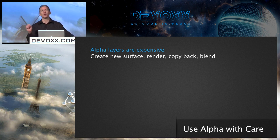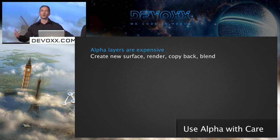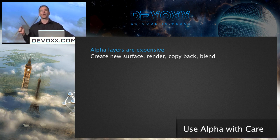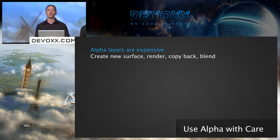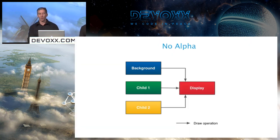When we draw a view normally, we just draw it directly into that surface using GL commands. But when we have a translucent view, we create a temporary buffer, draw into that buffer, and then copy it back to the display surface, blending it with the pixels already there. That's at least three or four times the amount of work — creating things on the fly, uploading new things to the GPU, and a potentially more expensive blending operation depending on hardware capabilities.